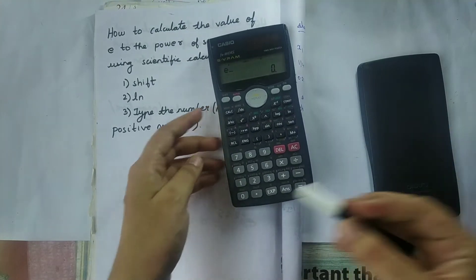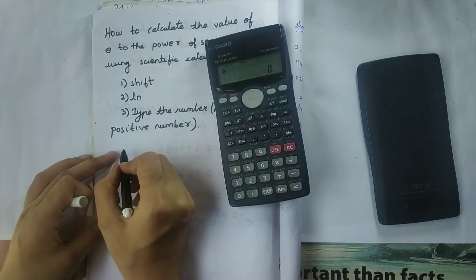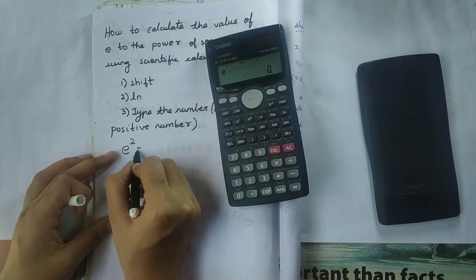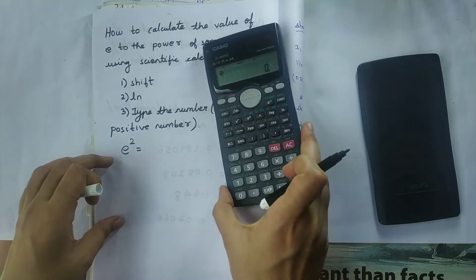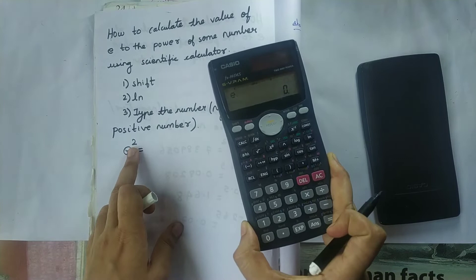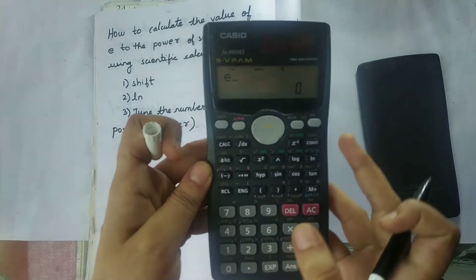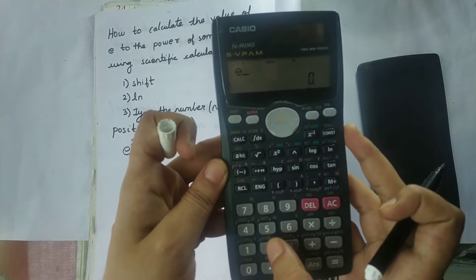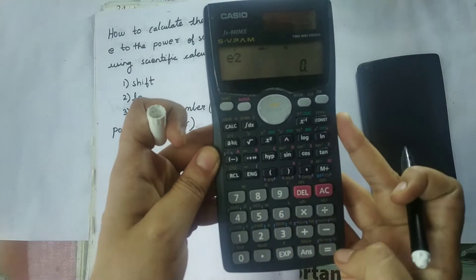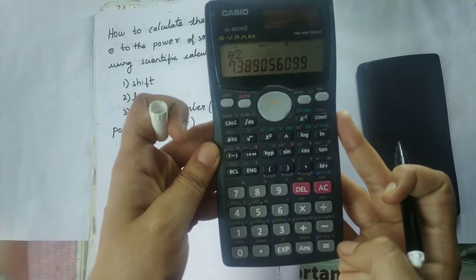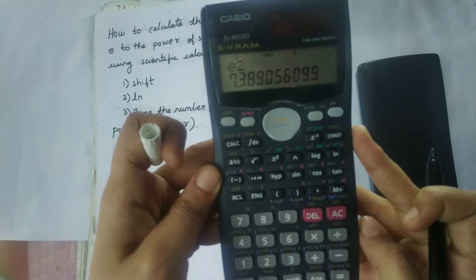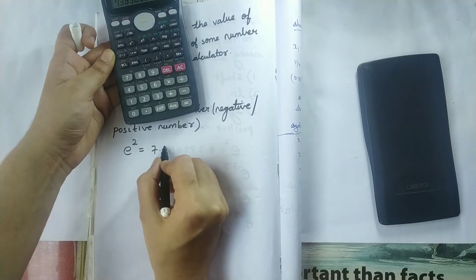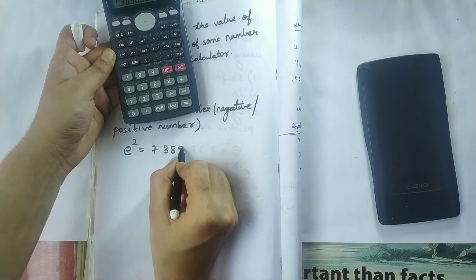Now for example, if in the question it is given as e to the power of 2, then I should type the number as 2 and 2 is a positive number. So now I should press the number 2 and then I should press equal to sign. So the answer is 7.3890.